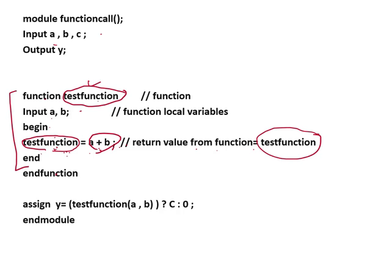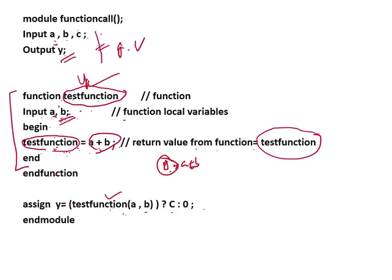The function always returns a value to the name of the function. It is not like writing y = a + b — if you write y = a + b inside the function, then y has to be the name of the function. Here we call: 'assign y = test_function(a, b) ? ... : 0'. The variables a and b declared inside the function are local variables, because they are declared inside the function. The a, b, c, and y outside the function are called global variables.